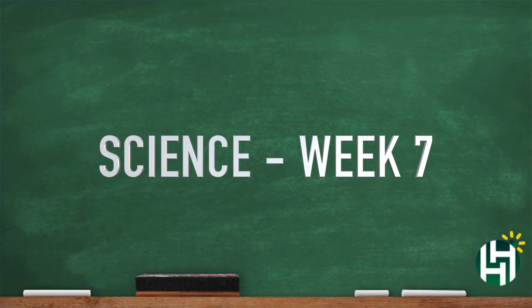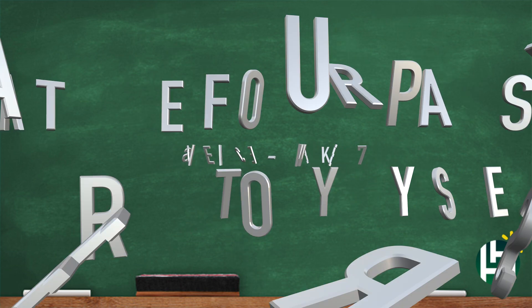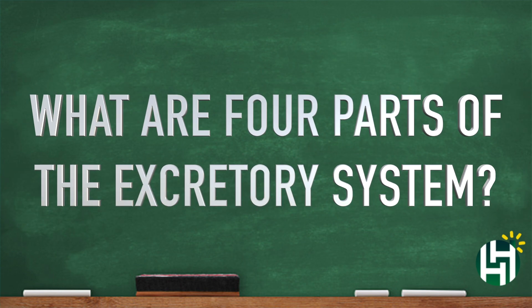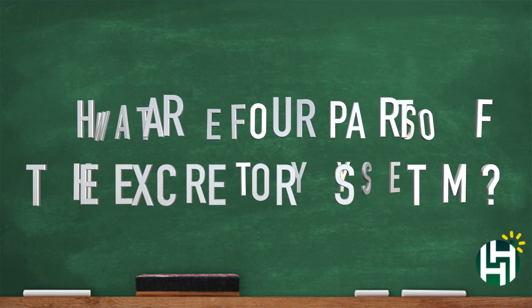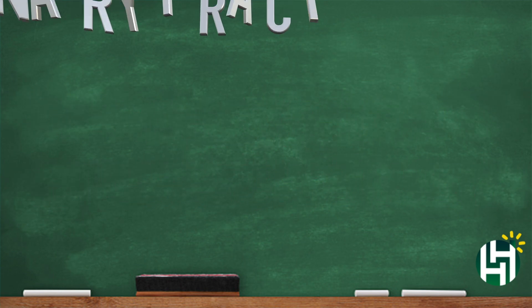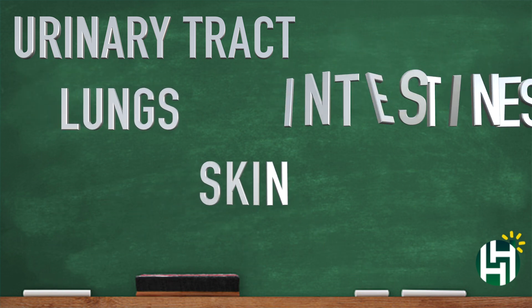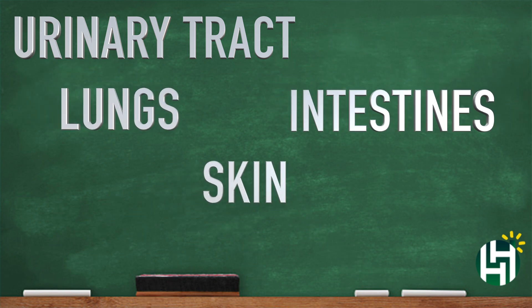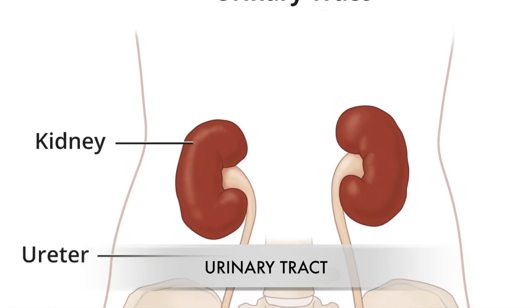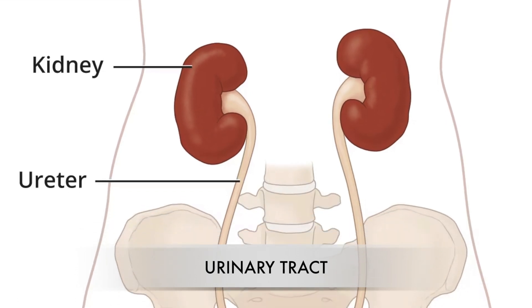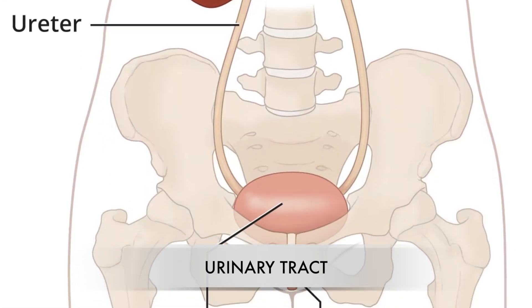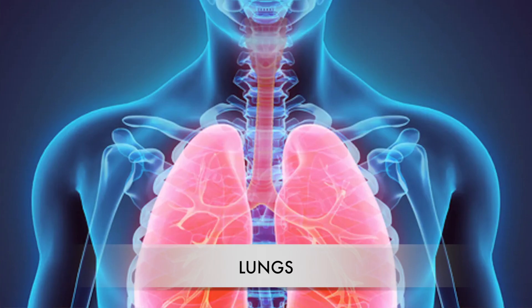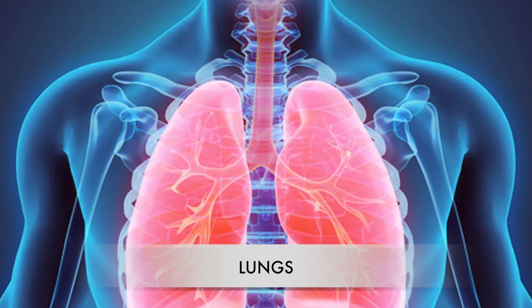Hey everybody, welcome back. Week seven science — got a question for you: what are four parts of the excretory system? Urinary tract, lungs, skin, intestines. Yeah, okay — urinary tract, lungs, skin, intestines. That's right.